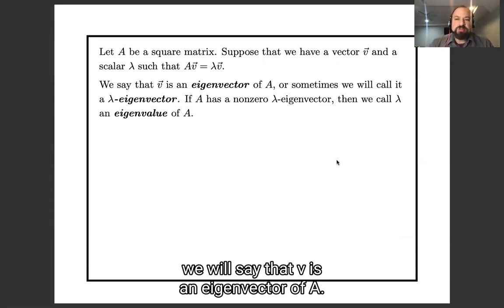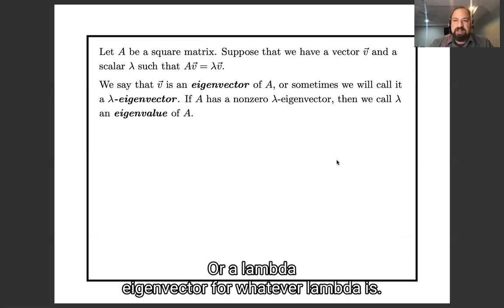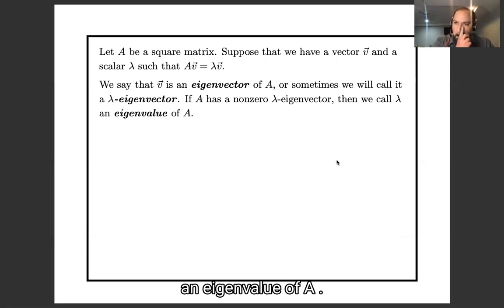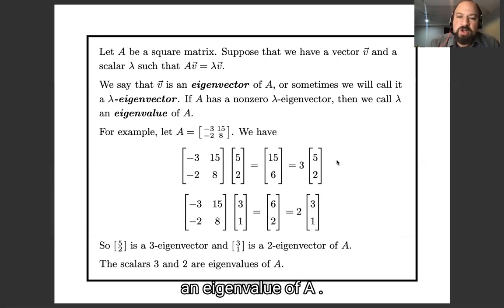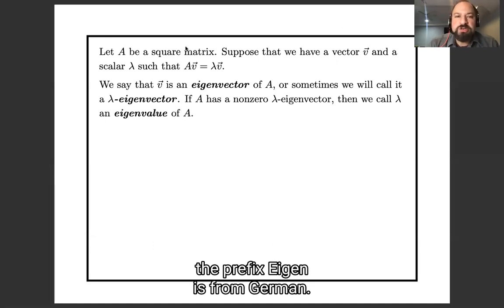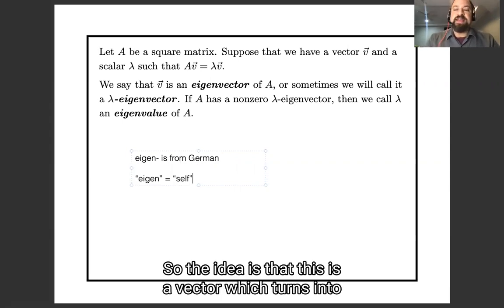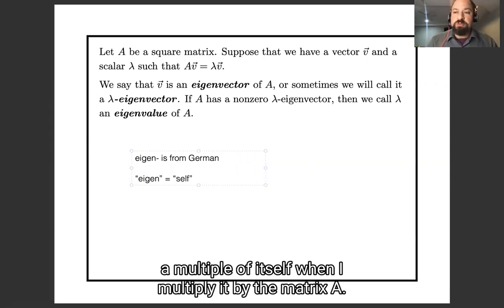When that happens, we will say that v is an eigenvector of A. We'll call it a λ-eigenvector if we want to say what λ is. And if A has a non-zero λ-eigenvector, then we call λ an eigenvalue of A. A little etymology note: the prefix eigen is from German. I don't speak German, but what I'm told is that eigen means something like self. So the idea is that this is a vector which turns into a multiple of itself when I multiply it by the matrix A.